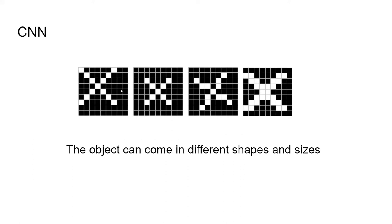We cannot compare pixel by pixel — so what if we let the model recognize different parts of an X? When the picture has all these parts, the model knows it's an X. For example, a model may not know how a face looks, but if we tell it a face has two eyes, one nose, and one mouth — when the model sees all these features it knows it's a face.